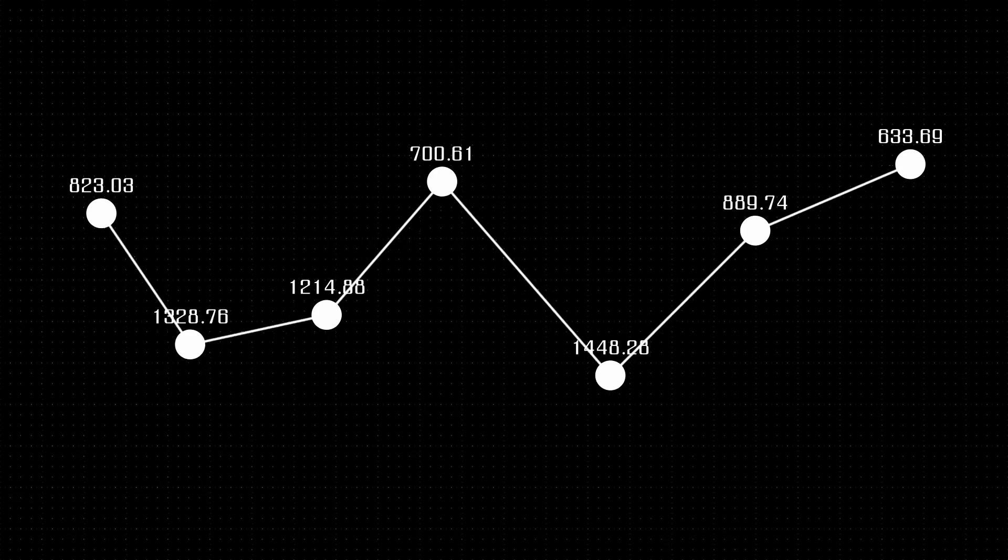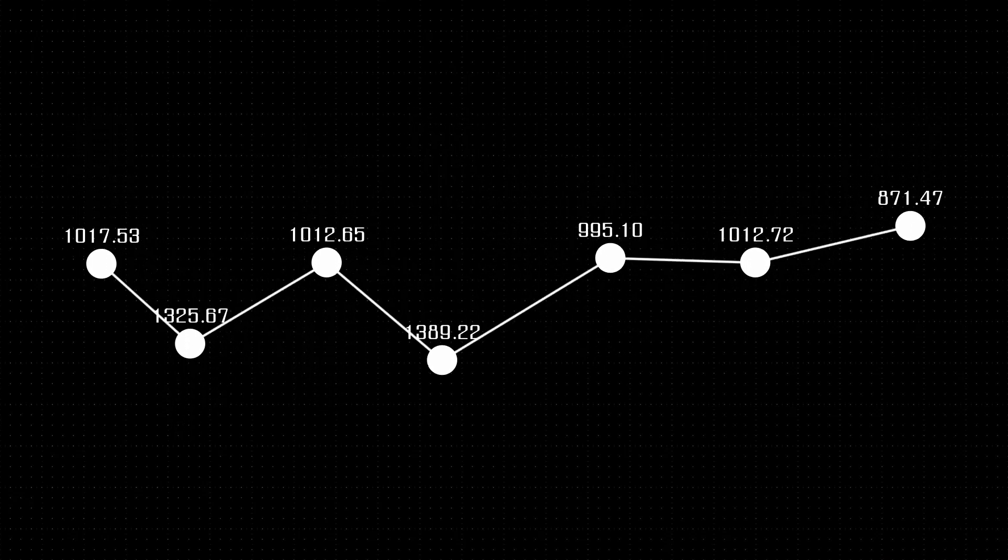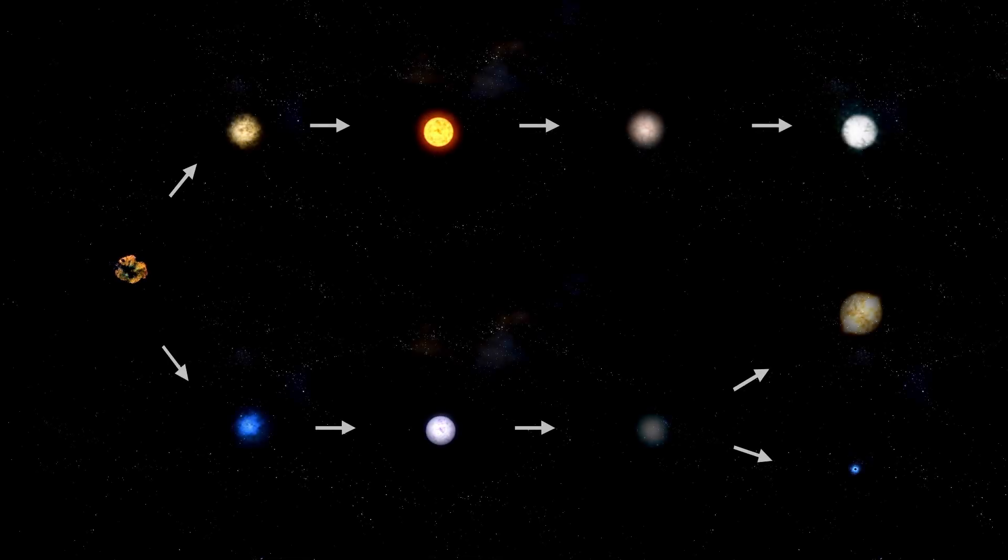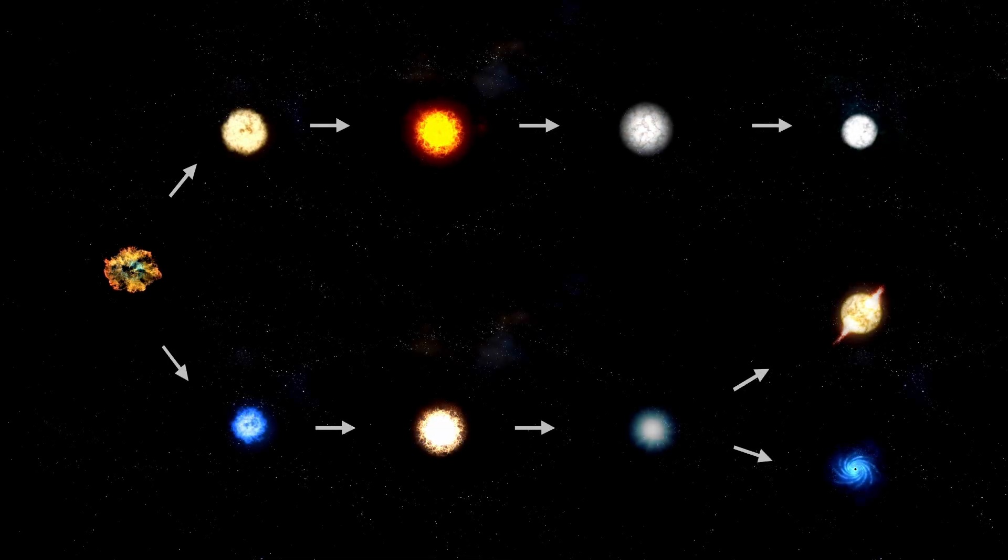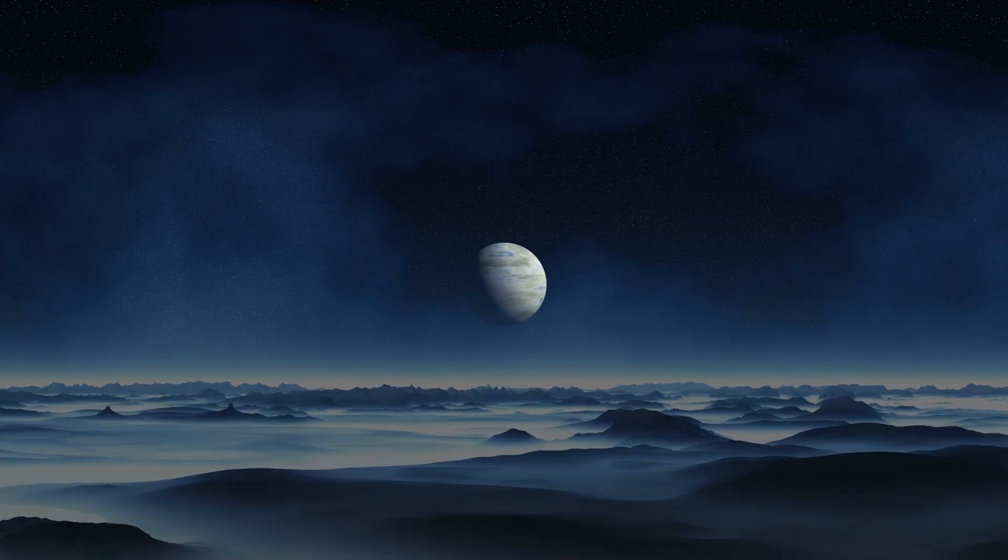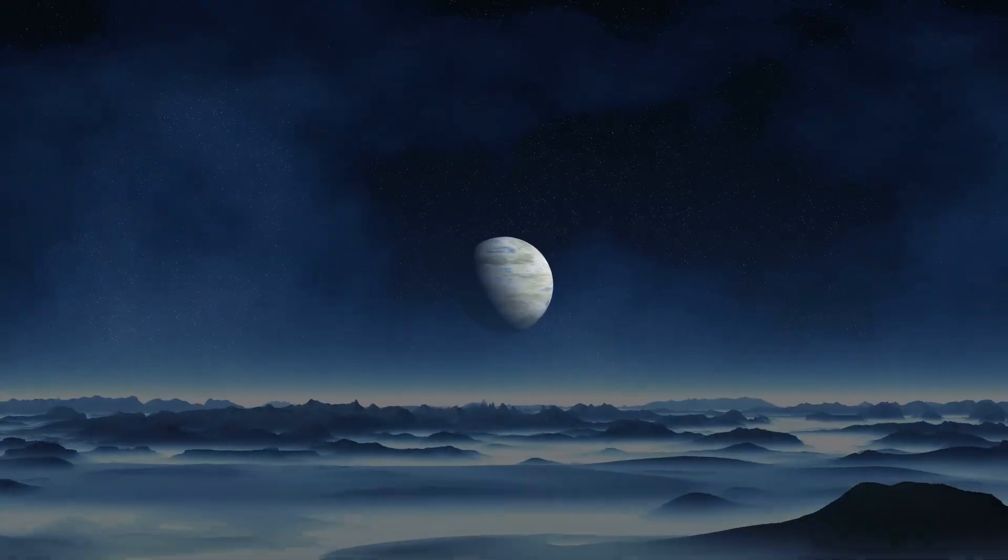A clear signal that the star is nearing its final phase. In late 2019, something remarkable occurred. Betelgeuse began to dim dramatically. By February 2020, its brightness had decreased to less than half of what had ever been recorded before.